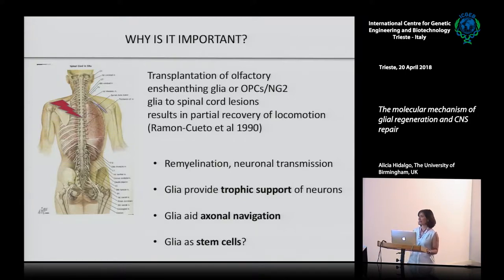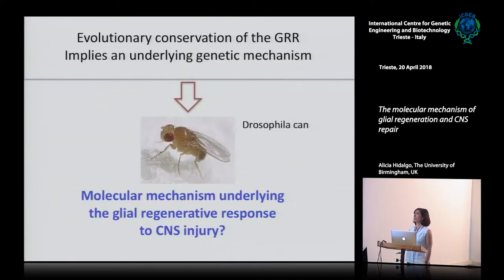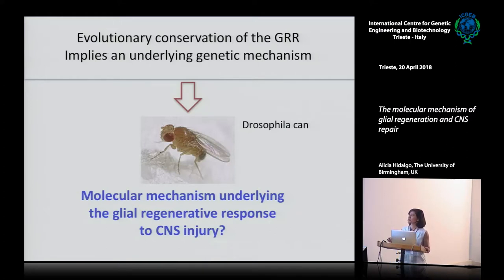This is the framework in which we are investigating these events. The data I'm going to tell you about today is the regeneration of the glial cells - known in the mammalian community as remyelination - which is the restoration of glial cells, the glial regeneration. If injury provokes a glial regenerative response in cockroach, flies, fish, mice, and humans, and it's found in the same profile - induction of proliferation, re-enwrapment, recovery of some limited function - then there must be a genetic mechanism. If this is evolutionarily conserved, we can find it and tackle it with Drosophila.